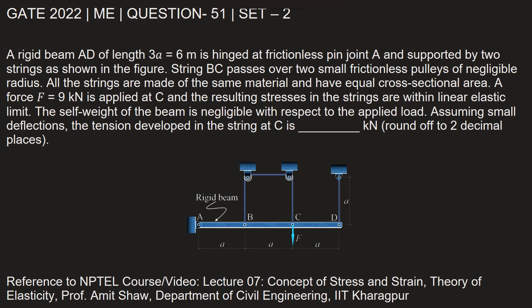This question is from the 2022 mechanical engineering paper set 2, question number 51. A rigid beam AD of length 3a equal to 6 meters is hinged at frictionless pin joint A and supported by two strings as shown in the figure.